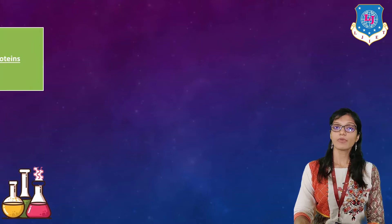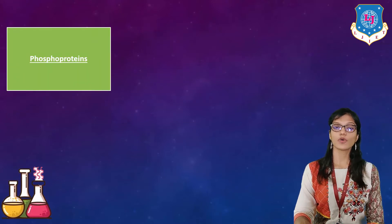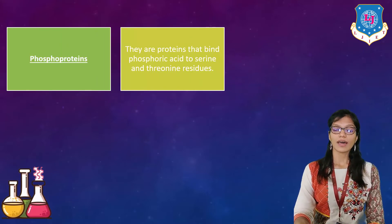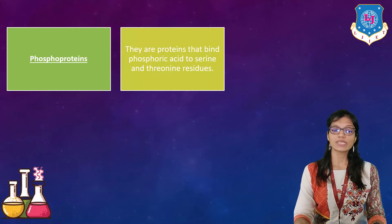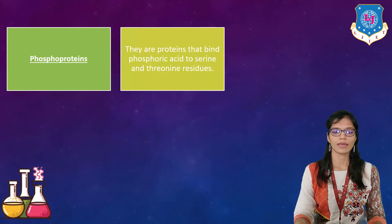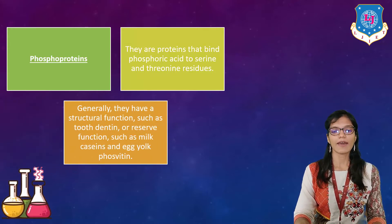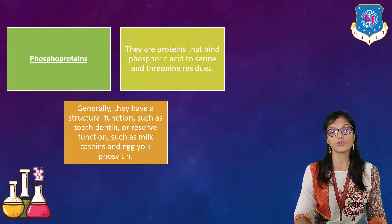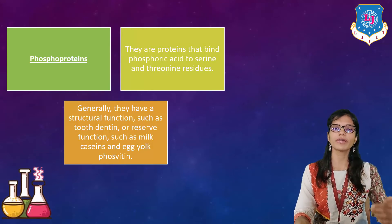The next type is phosphoproteins — proteins that bind phosphoric acid to serine and threonine residues. They generally have a structural function such as tooth dentin, or a reserve function such as milk caseins and egg yolk phosphatins.